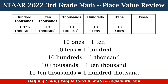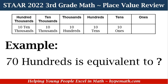Now let's dive into our place value review. Looking at our chart, we start from right to left: 10 ones is equal to one ten, 10 tens is equal to one hundred, 10 hundreds is equal to one thousand, 10 thousands is equal to one ten thousand, and 10 ten-thousands is equal to one hundred thousand. We have our chart to help us, so let's look at some examples.